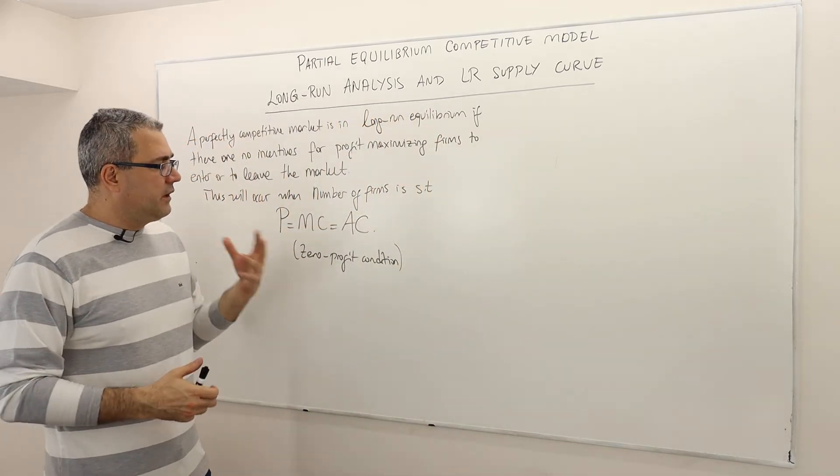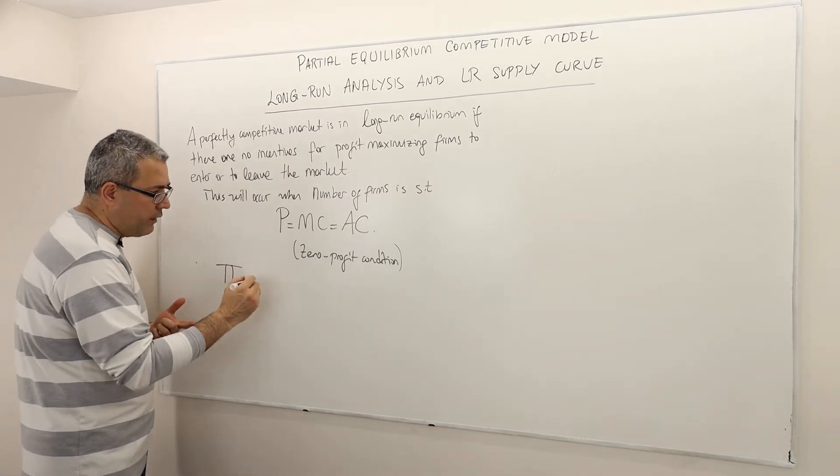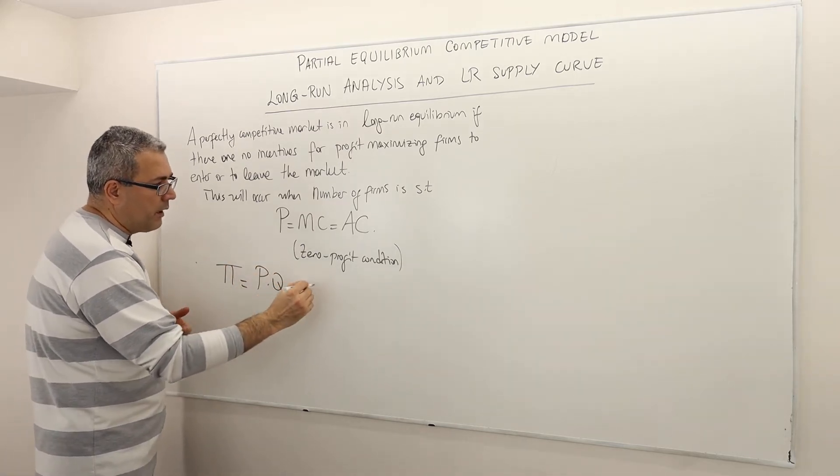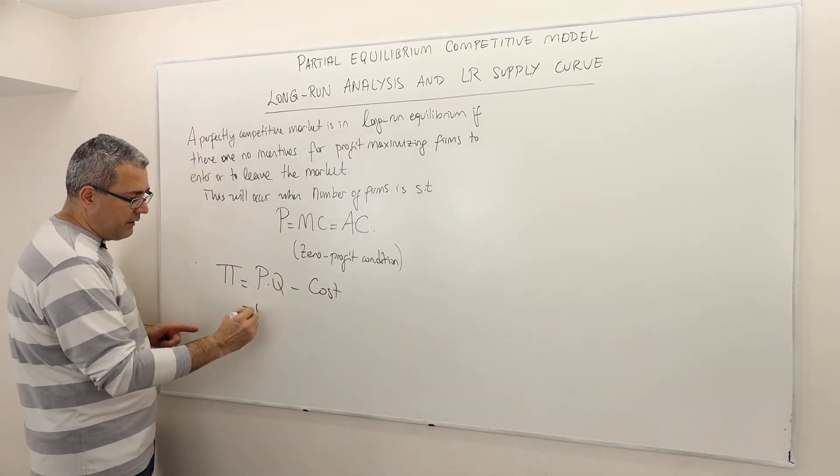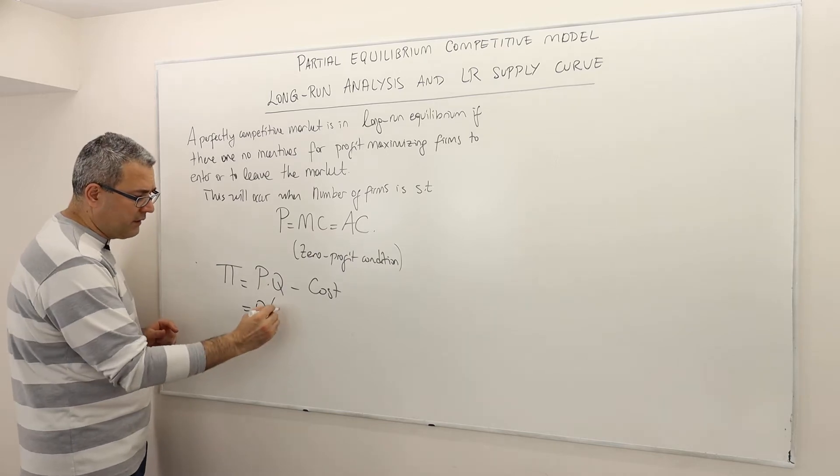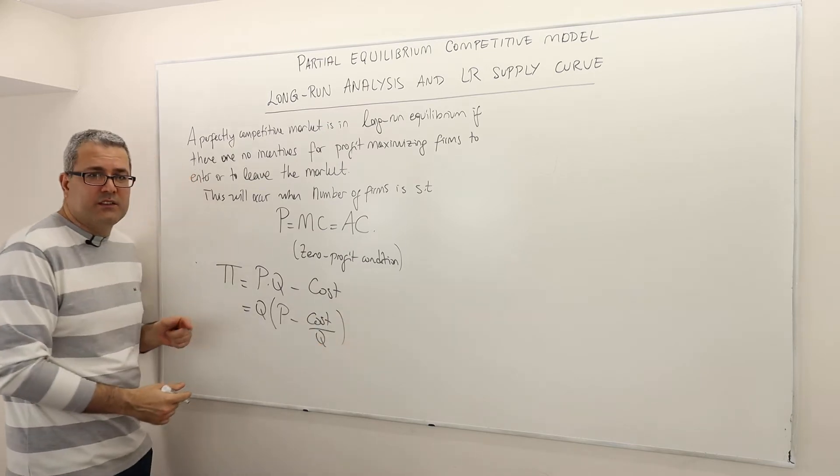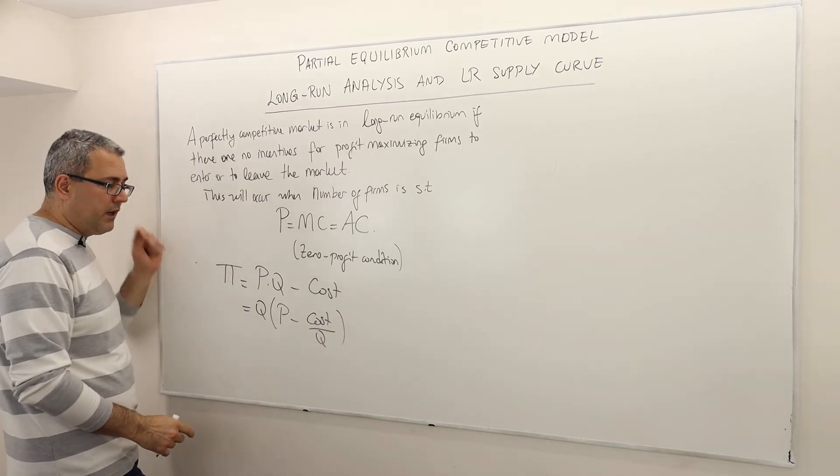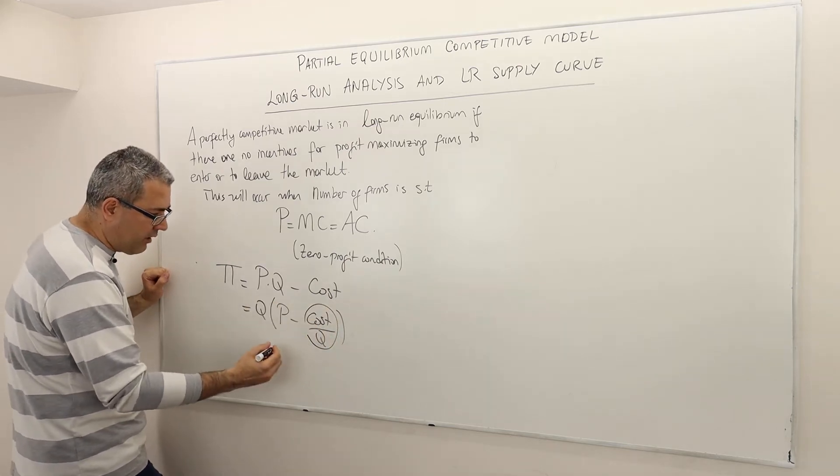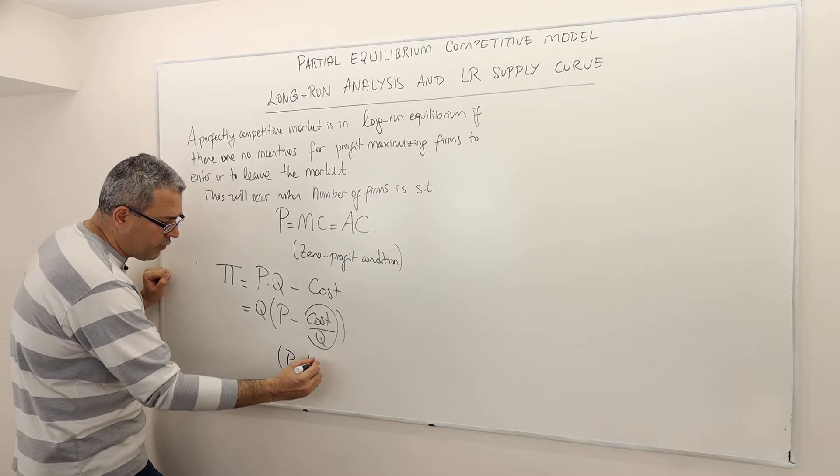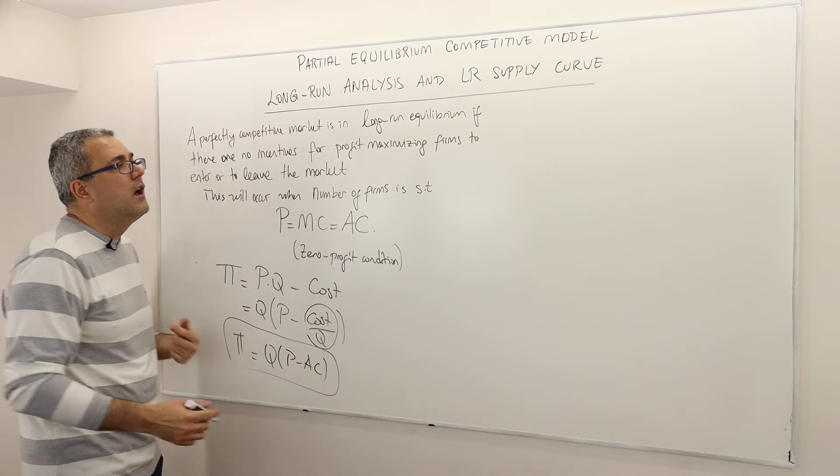Now let's look at why this is a zero profit condition. Remember the profit is the revenue P times Q minus cost. What I'm going to do, I can rewrite this, take into Q parentheses. It's going to be P minus cost divided by Q. So what is cost divided by Q? This is what we call average costs. So this is P minus average costs times quantity. So this is what profit is.